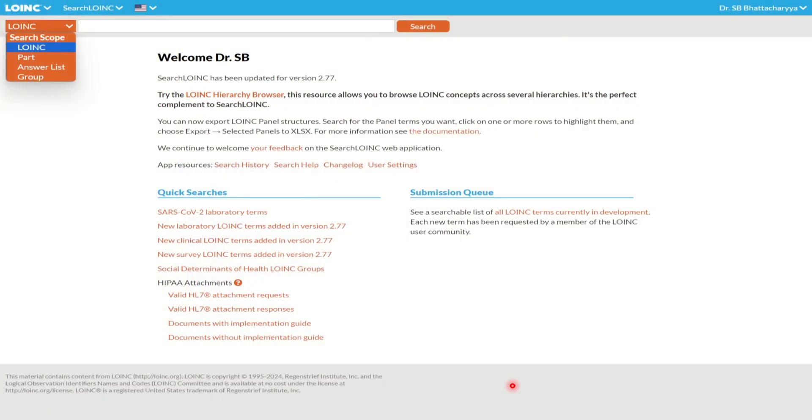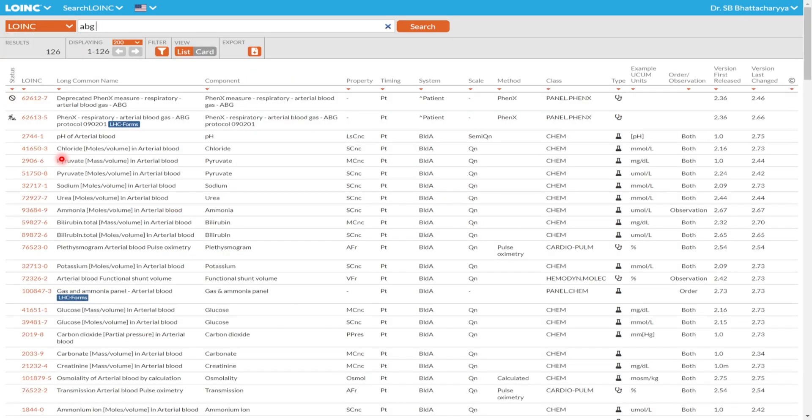Regenstrief Institute provides an online search for LOINC codes and names. This is free; free registration is required prior. As you can see, I am already logged in. This is the screenshot of the search LOINC home page list of options. So you can limit your scope: all of LOINC, just the part, an answer list, or the group. This is the subject of the next video in the series. Only relevant screenshots have been used here and in the next few slides. Let's explore the LOINC search browser.